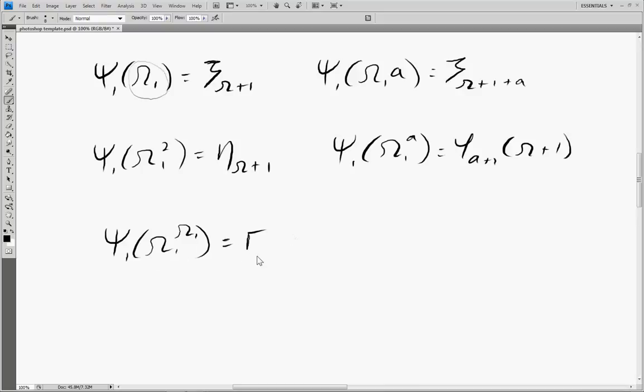Omega to the omega would be the first gamma number after omega. And eventually this function is going to get stuck permanently, just like it did with the Bachmann-Howard ordinal. And this happens at psi 1 epsilon omega 1 plus 1. And then we can't go any further with this psi 1 function.